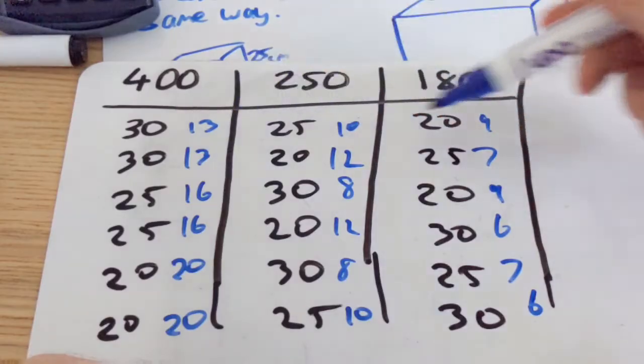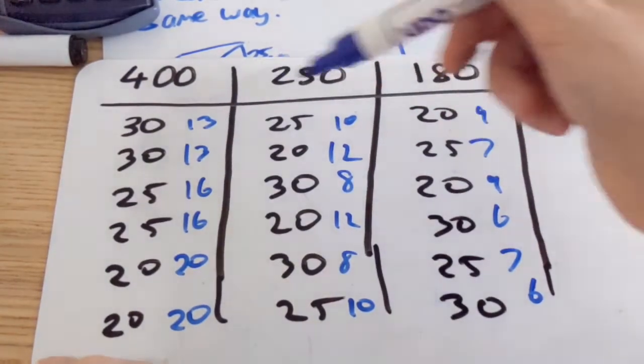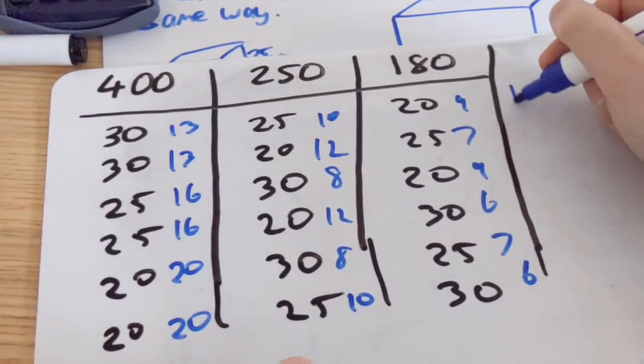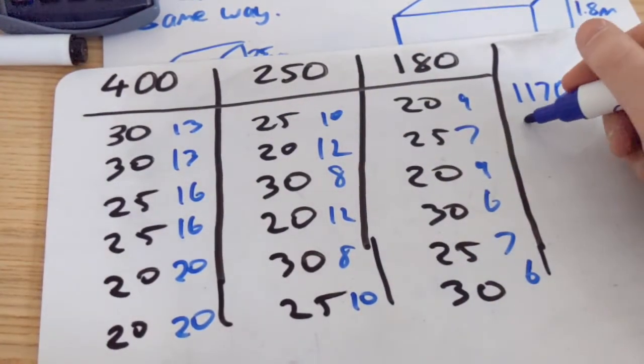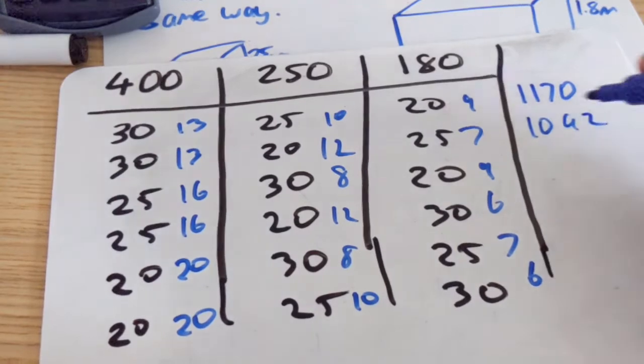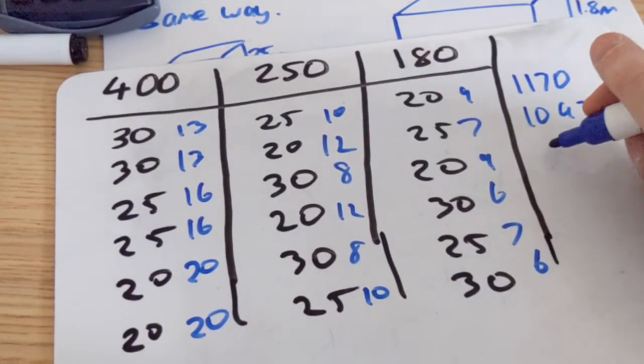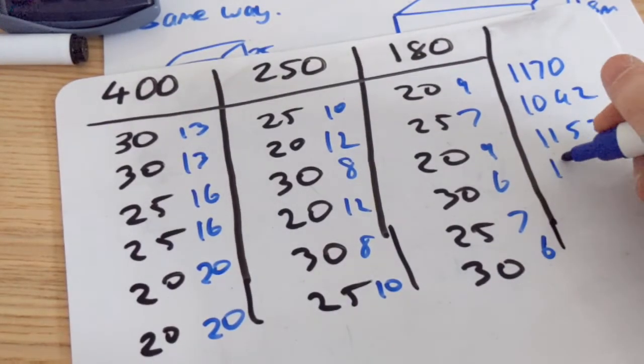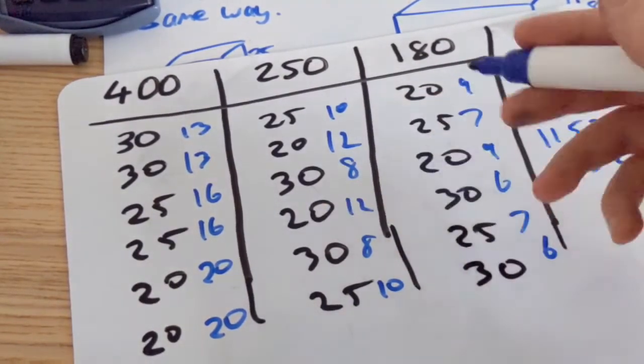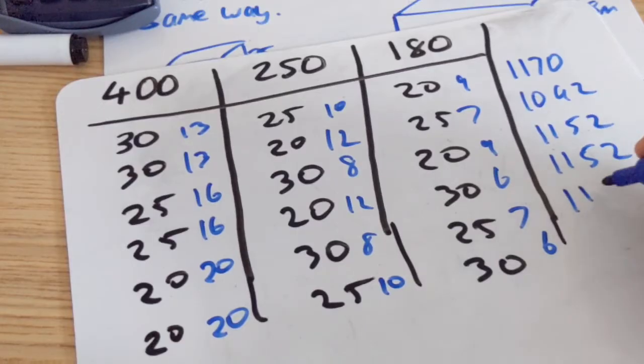The last thing we've got to do is just multiply along the rows. So 13 times 10 times 9 gives you 1170. 13 times 12 times 7 is 1092. 16 times 8 times 9 is 1152. 16 times 12 times 6 is 1152 as well. 20 times 8 times 7 is 1120.